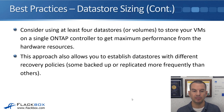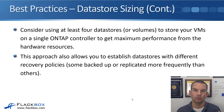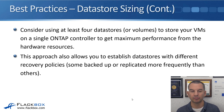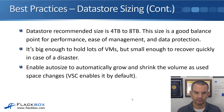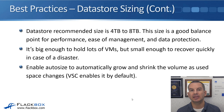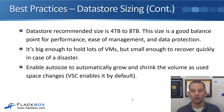Consider using at least four datastores or volumes if you're using vVols to store your VMs on a single ONTAP controller to get maximum performance from the hardware resources. This approach also allows you to establish datastores with different recovery policies, so some could be backed up or replicated more frequently than others. So while it's good to have fewer, larger datastores, you do want to have at least four. The recommended datastore size is between four and eight terabytes — that size is a good balance point for performance, ease of management, and data protection. It's big enough to hold lots of virtual machines but small enough to recover quickly in case of a disaster. Enable autosize to automatically grow and shrink the volume as used space changes; if you're using VSC, autosize is enabled by default.